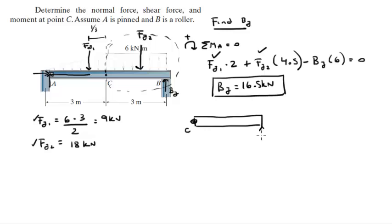You know that By is right here, By which equals 16.5 kN. You know we got an Fy right at the middle, Fy2, which we found to be 18 kN. And we know we have a shear BC, normal NC, and a moment MC.